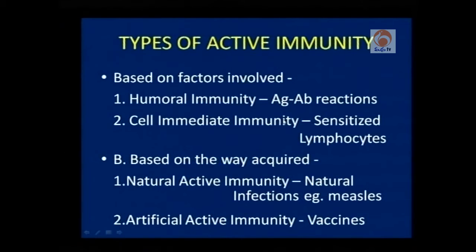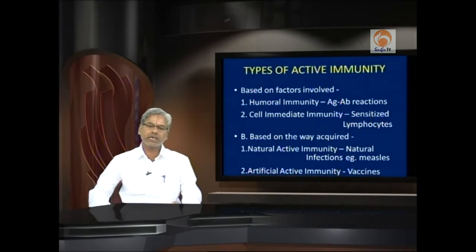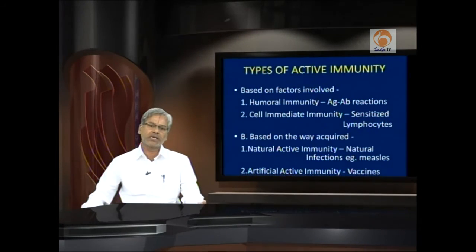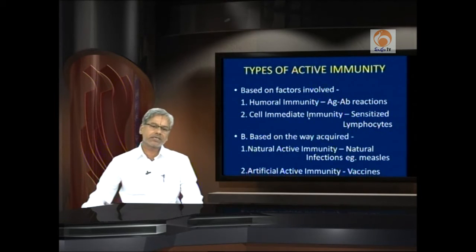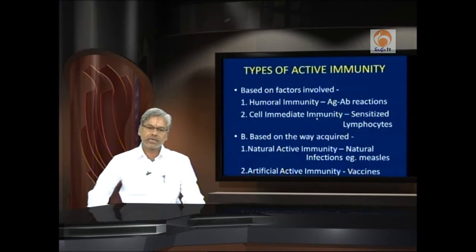Humoral immunity involves antigen-antibody reactions. A series of reactions takes place since the infection. A number of B cells are involved; a specific B cell population is selected, a clone is selected, then memory is created. Whenever there is a secondary infection, a secondary immune response is generated at once by the production of huge amounts of antibodies against the specific antigen. Cell-mediated immunity does not involve antigen-antibody reactions; it is caused by sensitized lymphocytes killing the pathogens in various means.